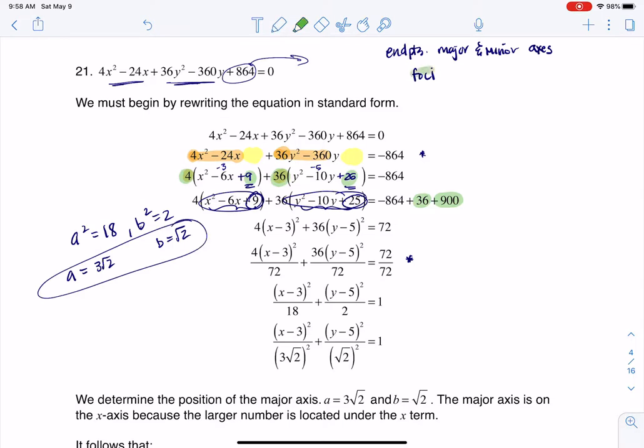I'm also gonna go get c only because it did say here get the foci. So if we know that c squared is a squared minus b squared, in this case that would be 18 minus 2. Well that actually turns out nice—c squared is 16, so c is gonna be 4, and I'll keep that in mind as I move forward. I can also read my center—it's (3, 5). So that's great, we're gonna start to put these pieces together.